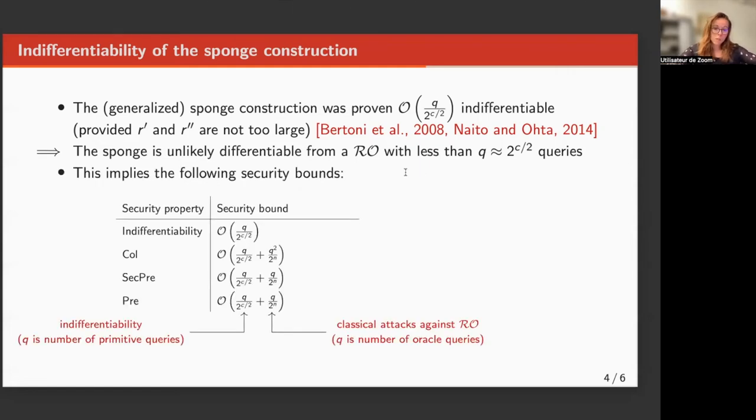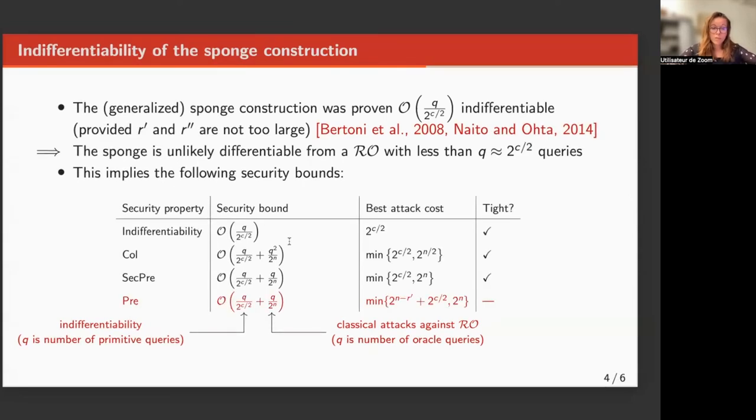This is what we can see on this table, where for the classical security properties, the security bound is the sum of two terms. The first one comes from indifferentiability, while the second one is the success probability of a generic attack on a random oracle. Now we can compare the security bound against the best known attack. So for indifferentiability, collision, and second pre-image, it is clear that the security bound matches the best known attack.